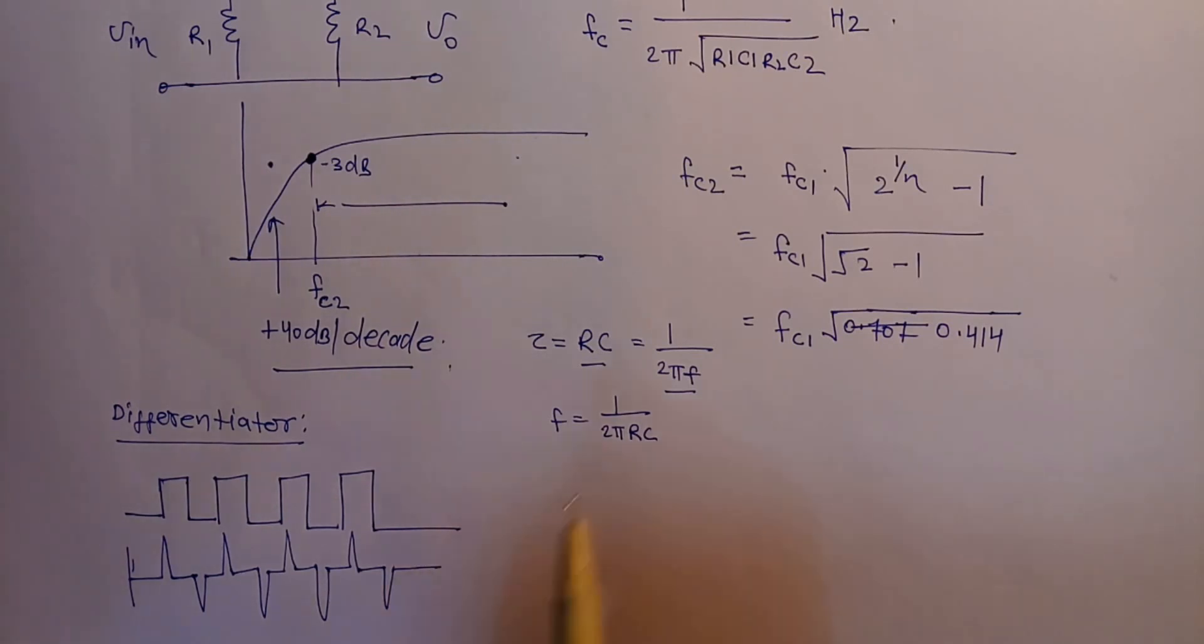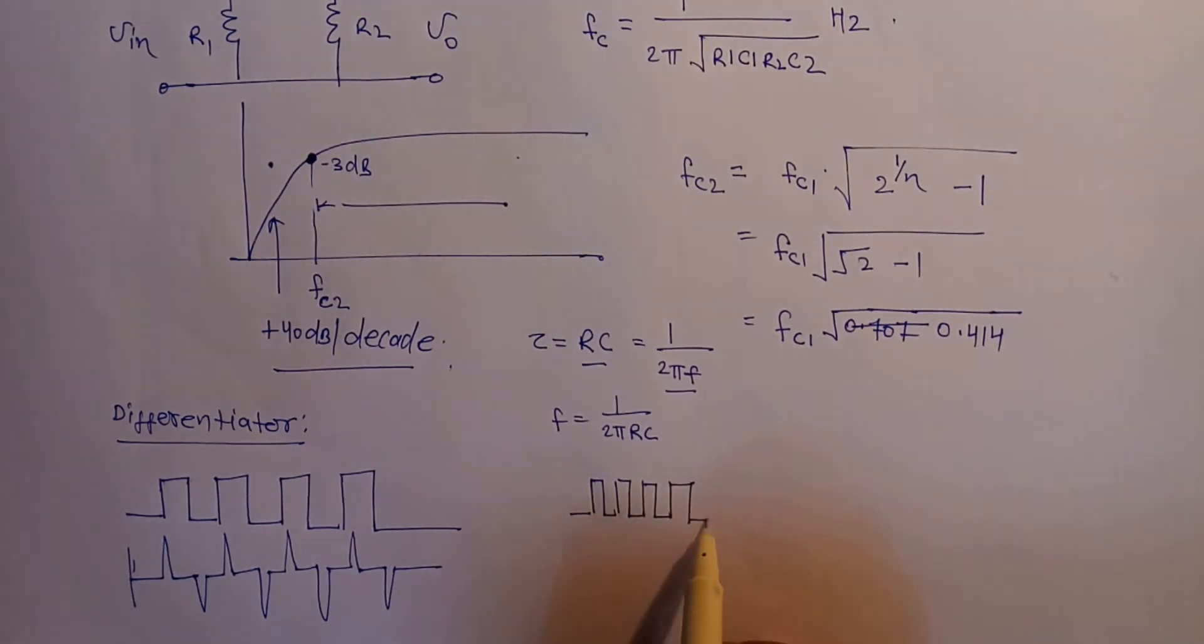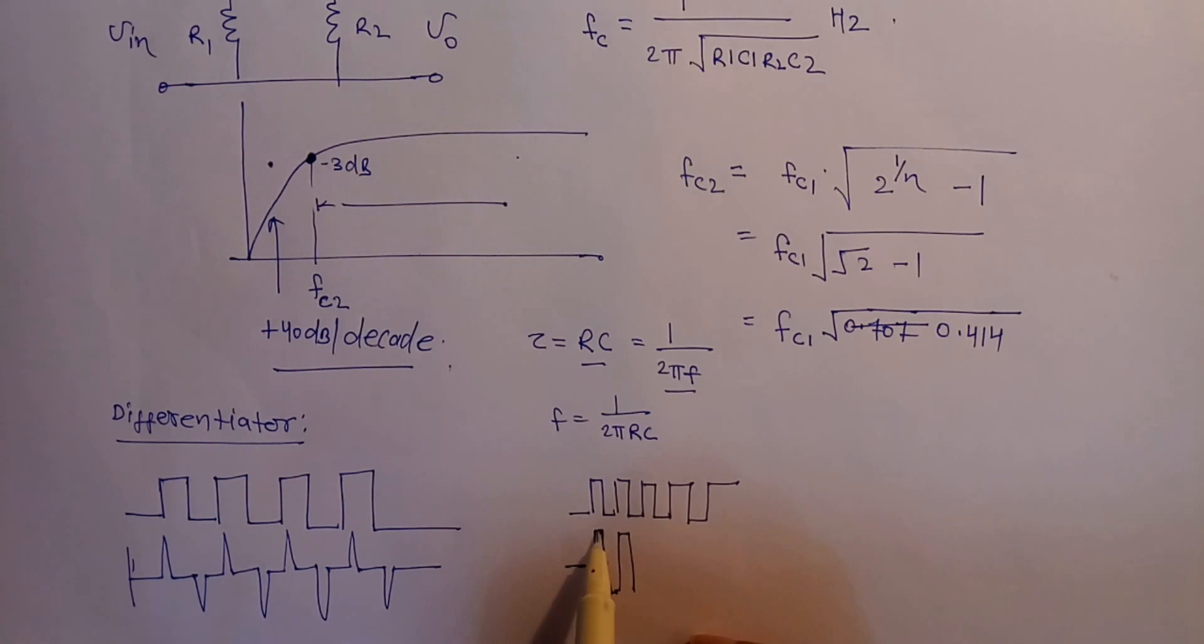For a very high frequency, if we apply very high frequency in the input, so the time constant will be very less. So we will get almost a square wave here. There will be very little distortion at the corner at a very high frequency.